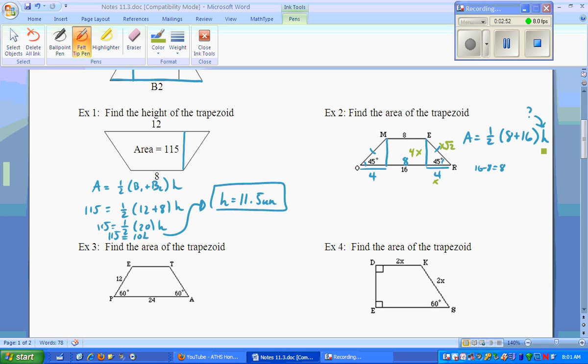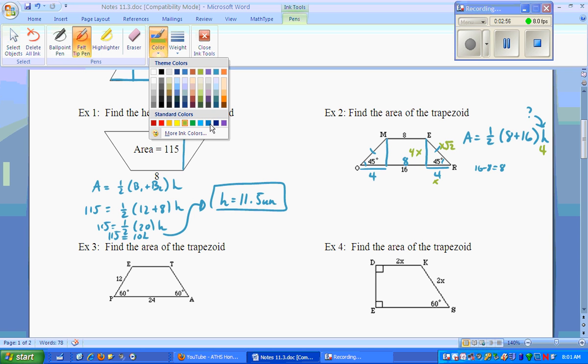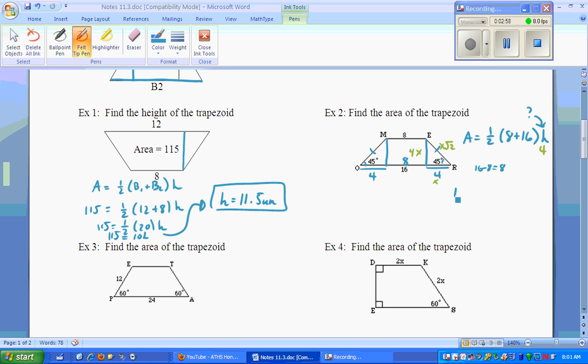So now we can say the height is 4. And now we can do our formula and jump into half of 8 plus 16, which is 24, times the height of 4. Multiply that all together and we get 48 units squared.